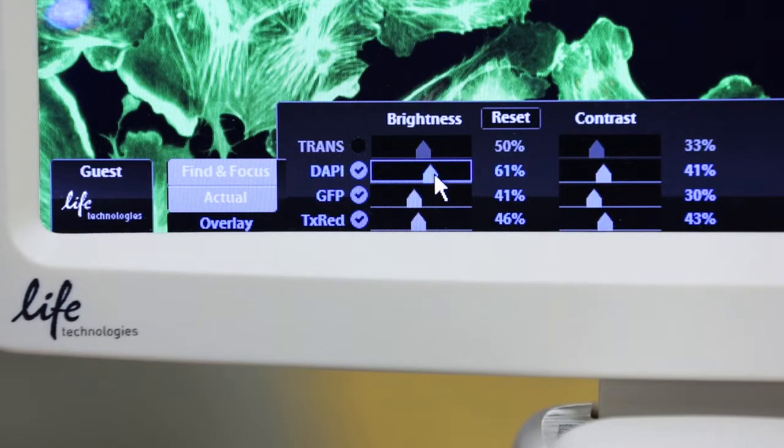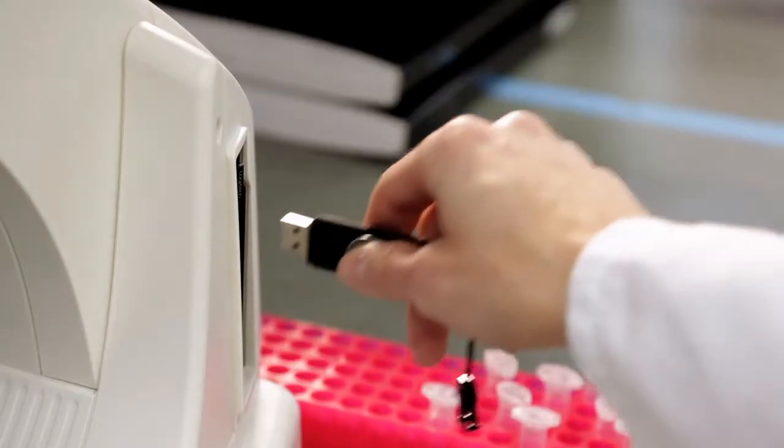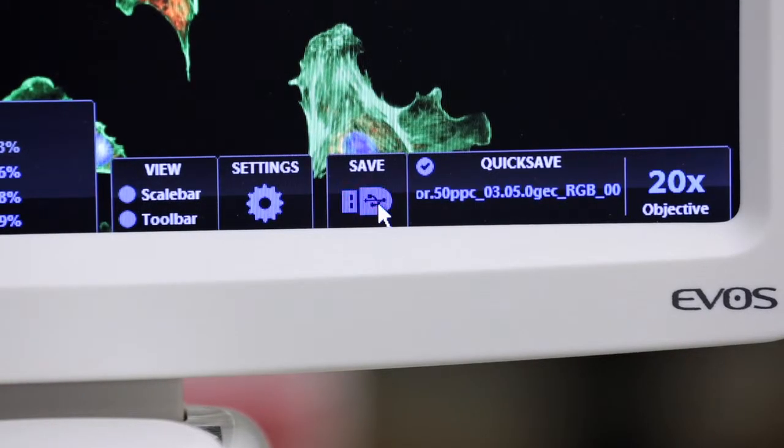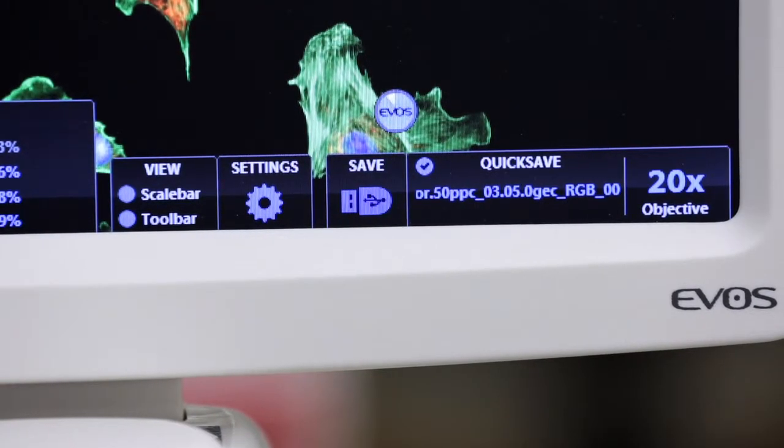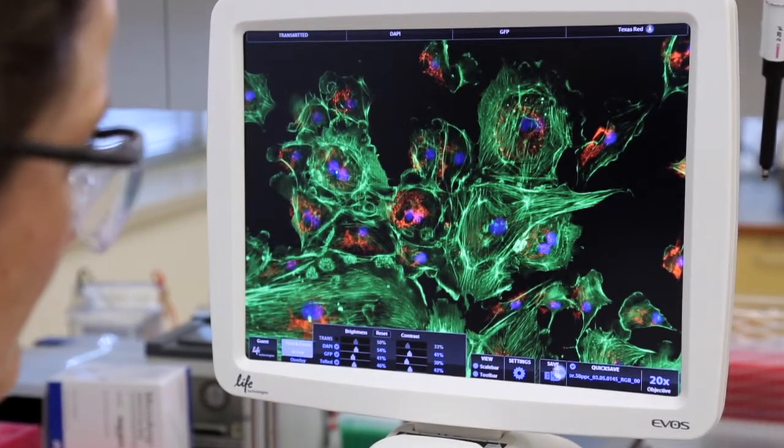The brightness and contrast of each individual channel can then be adjusted as necessary. High resolution images can be saved to a USB drive in JPEG, bitmap, TIFF or PNG file formats. Or the system can be connected to an internal network and be password protected.